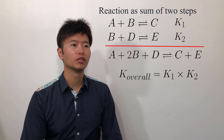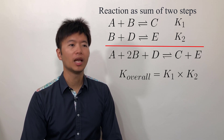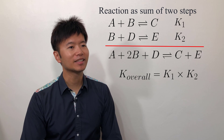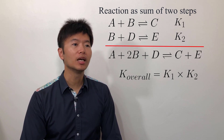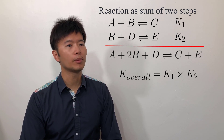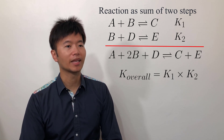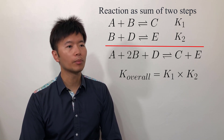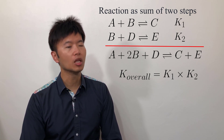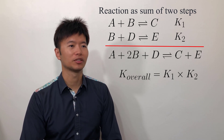In the next topic, we will look at the relationship between kp and kc. kp is the equilibrium constant with respect to partial pressures, and kc is the equilibrium constant with respect to molar concentrations.